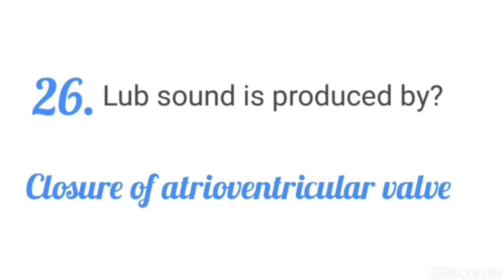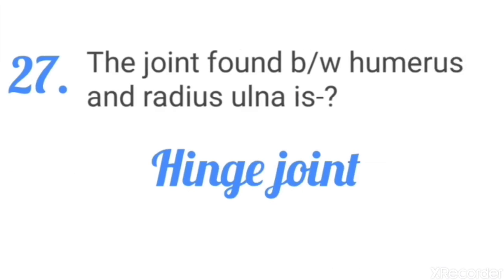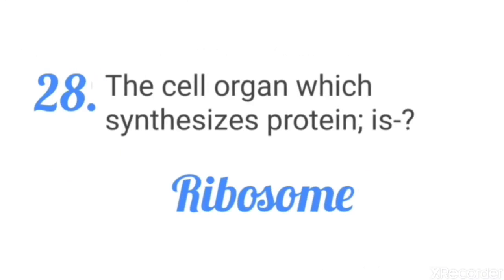The lub sound is produced by closure of the atrioventricular valve. The joint found between the humerus and radius-ulna is a hinge joint. The cell organelle which synthesizes protein is the ribosome.